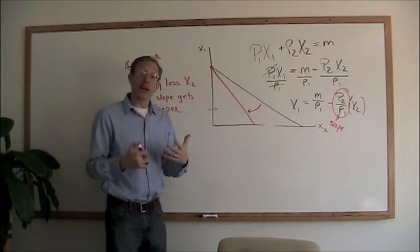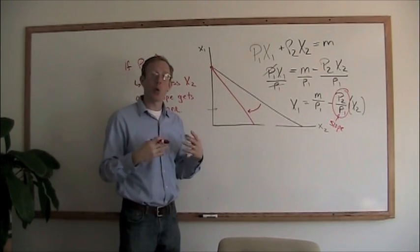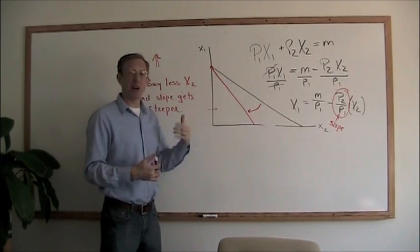So when we look at the optimization condition, one of the first things we look at is the budget constraint. What's restraining you from getting more and more and more stuff? Well, it's your budget.